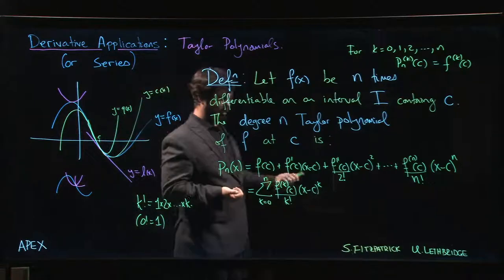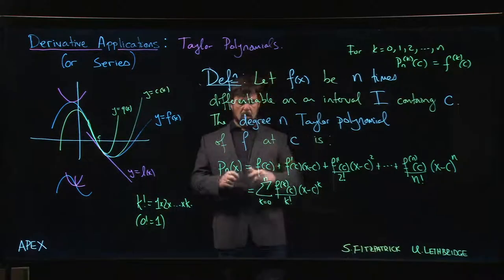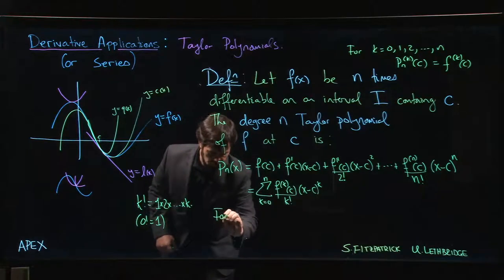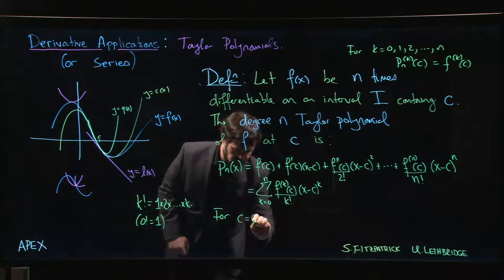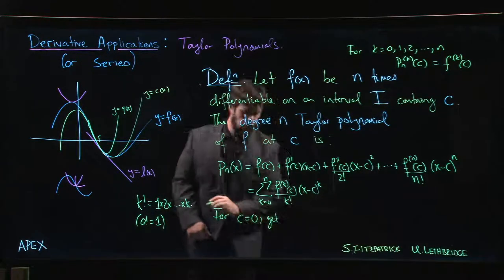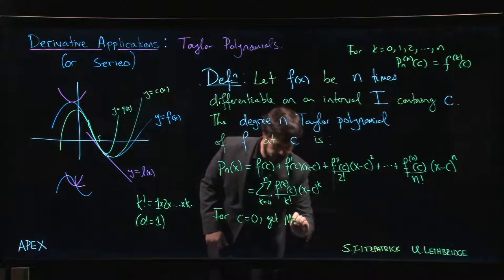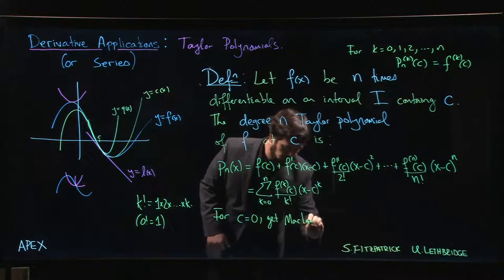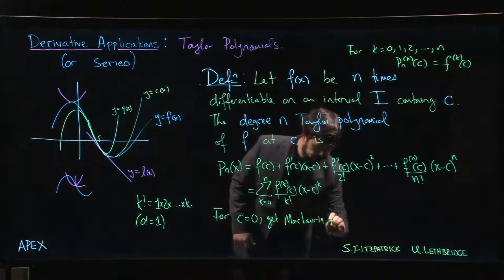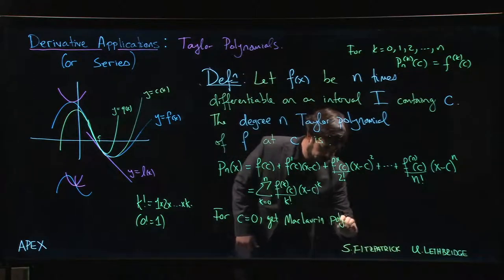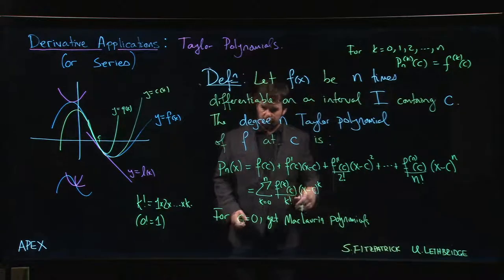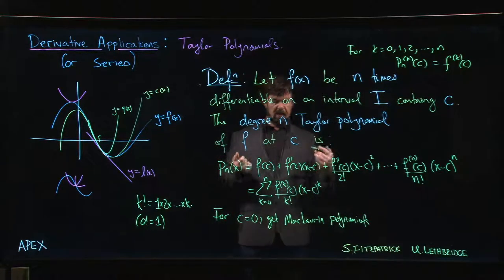One last note is that if you put c equal to 0, you get what are called Maclaurin polynomials.